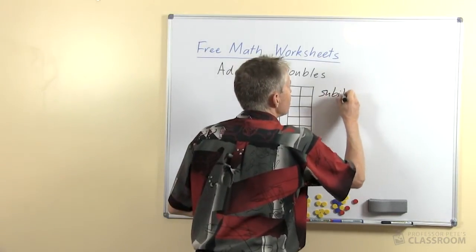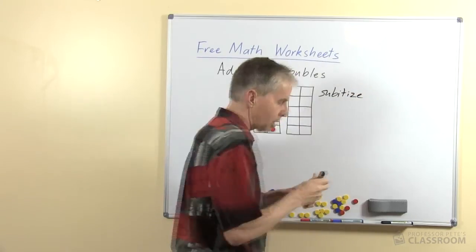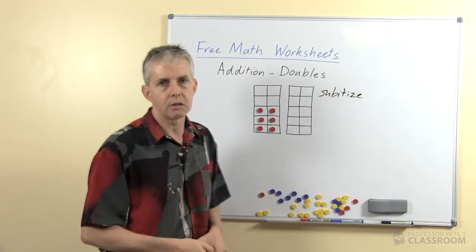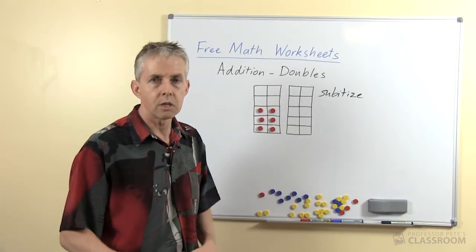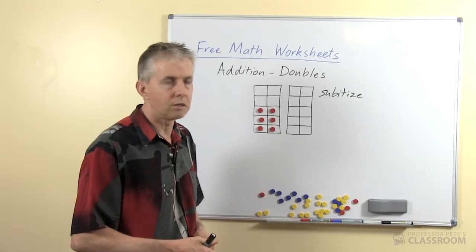Now the process that we want the students to use, that they'll naturally use is subitization, which means to be able to see how many are in a group without actually counting them. In other words, recognize the number that's in the group.